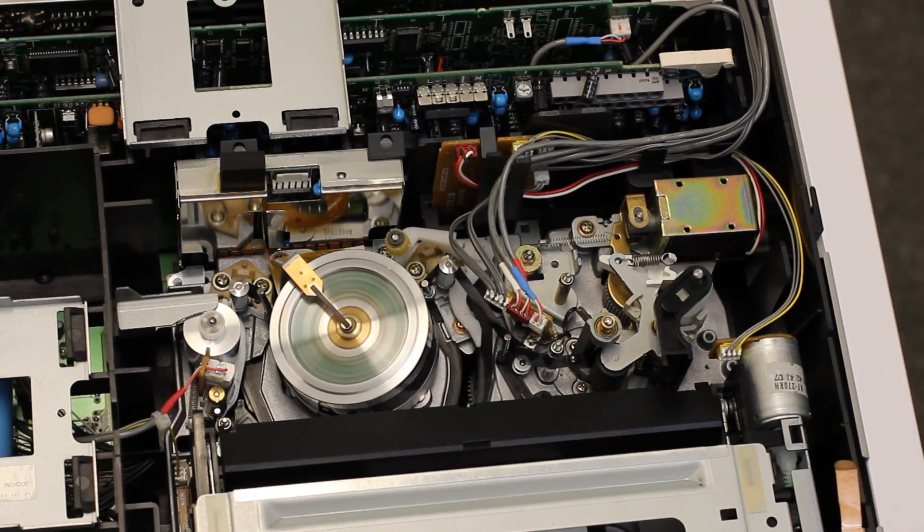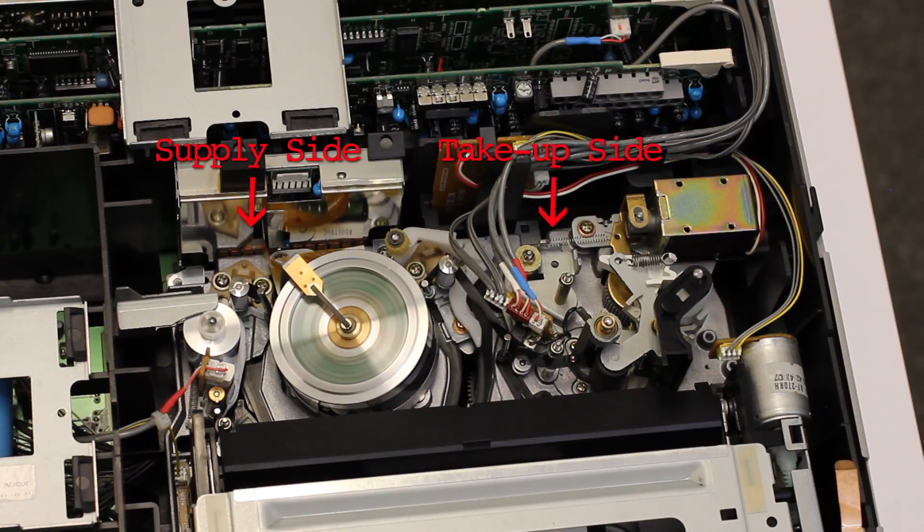There are basically two sides. The supply side, where the tape enters the machine, and the take-up side, where it goes back into the cassette.